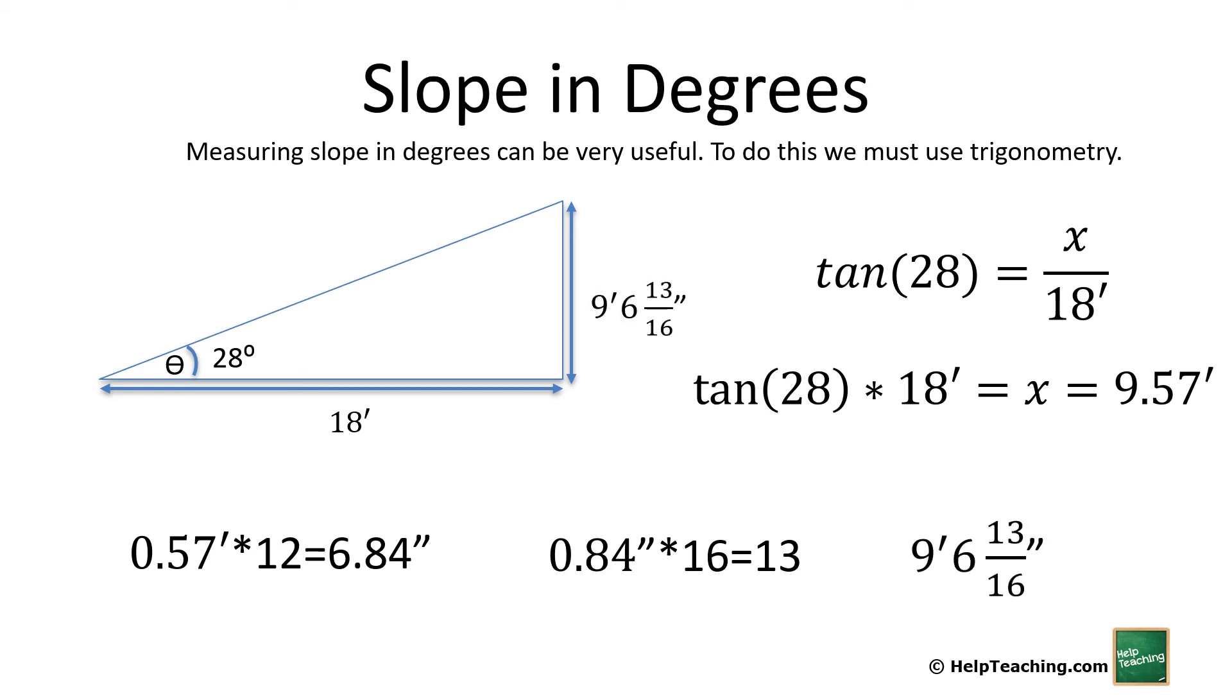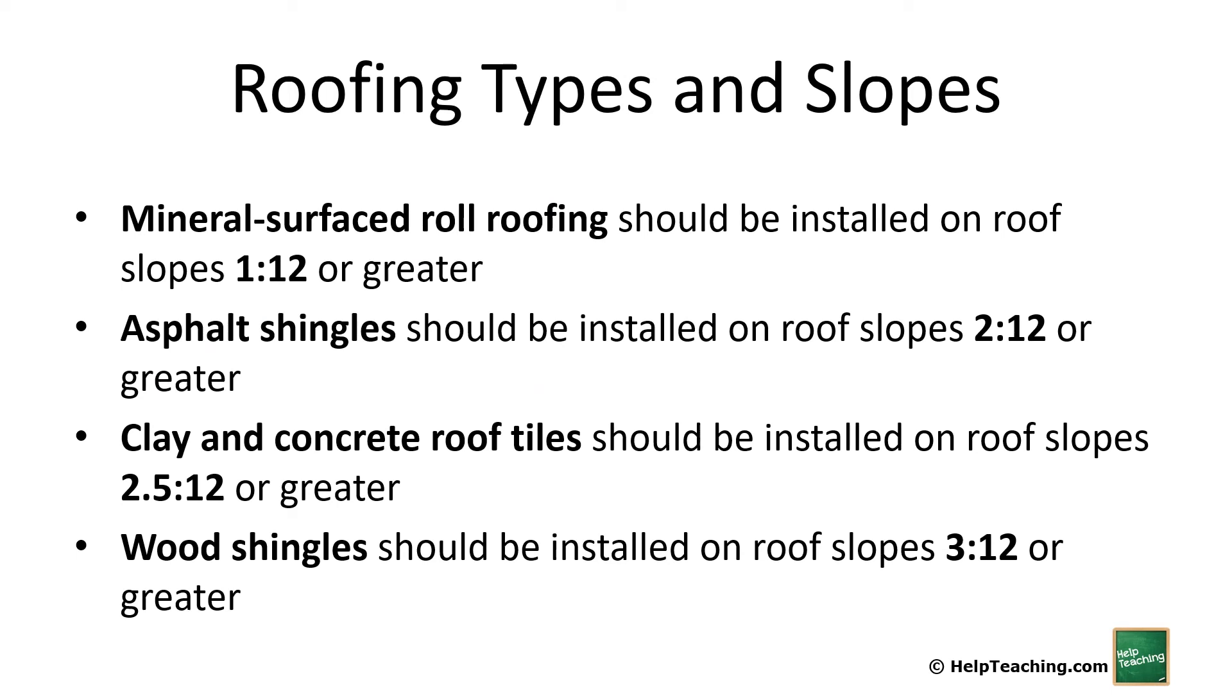As a quick reference, here's some general acceptable norms for some common roofing materials. A mineral surface rolled roofing should be installed on roof slopes of 1:12 or greater, so they can be very flat but they shouldn't be perfectly flat. We still don't want water pooling on them. The water should be able to move to the edges or to wherever our drains are.